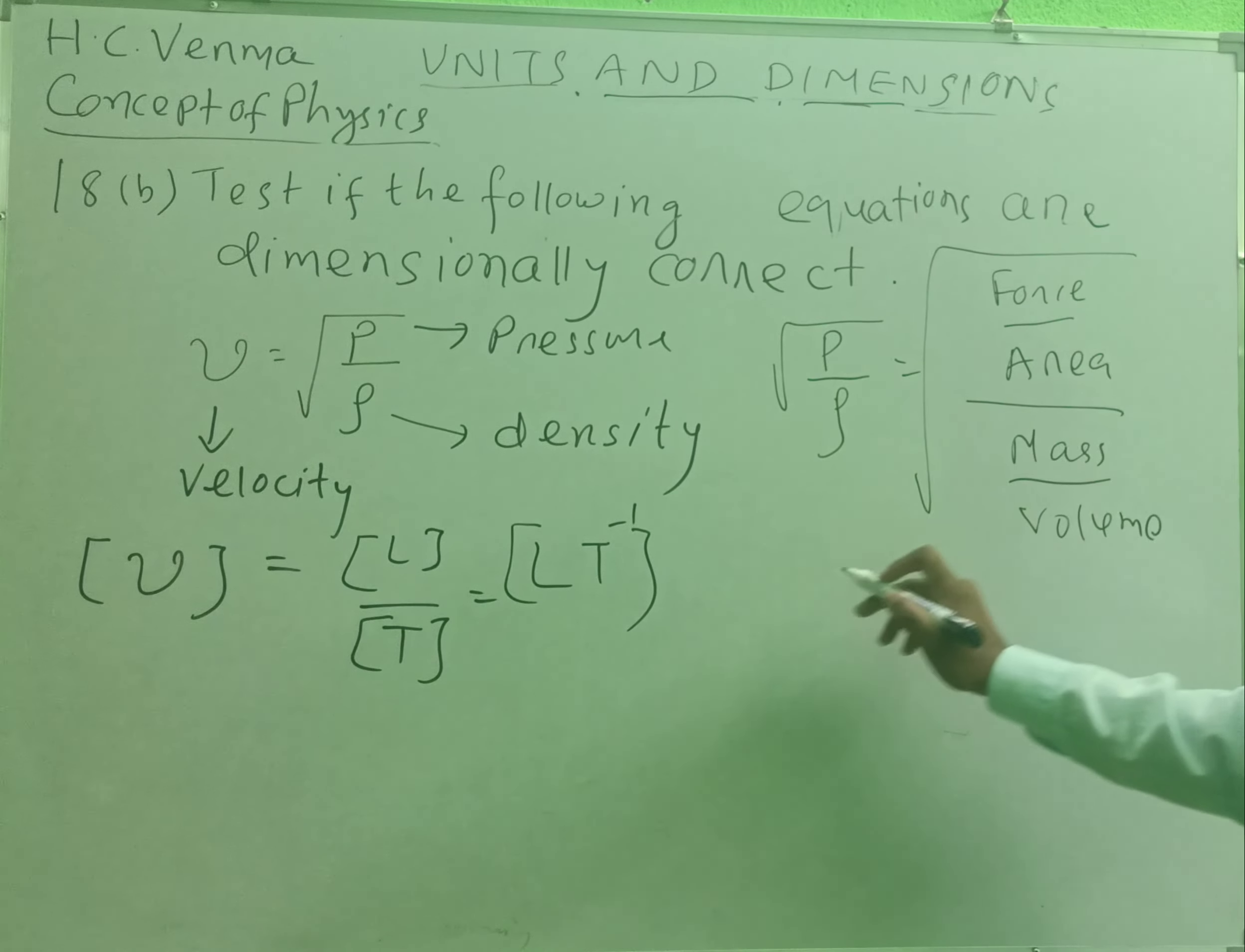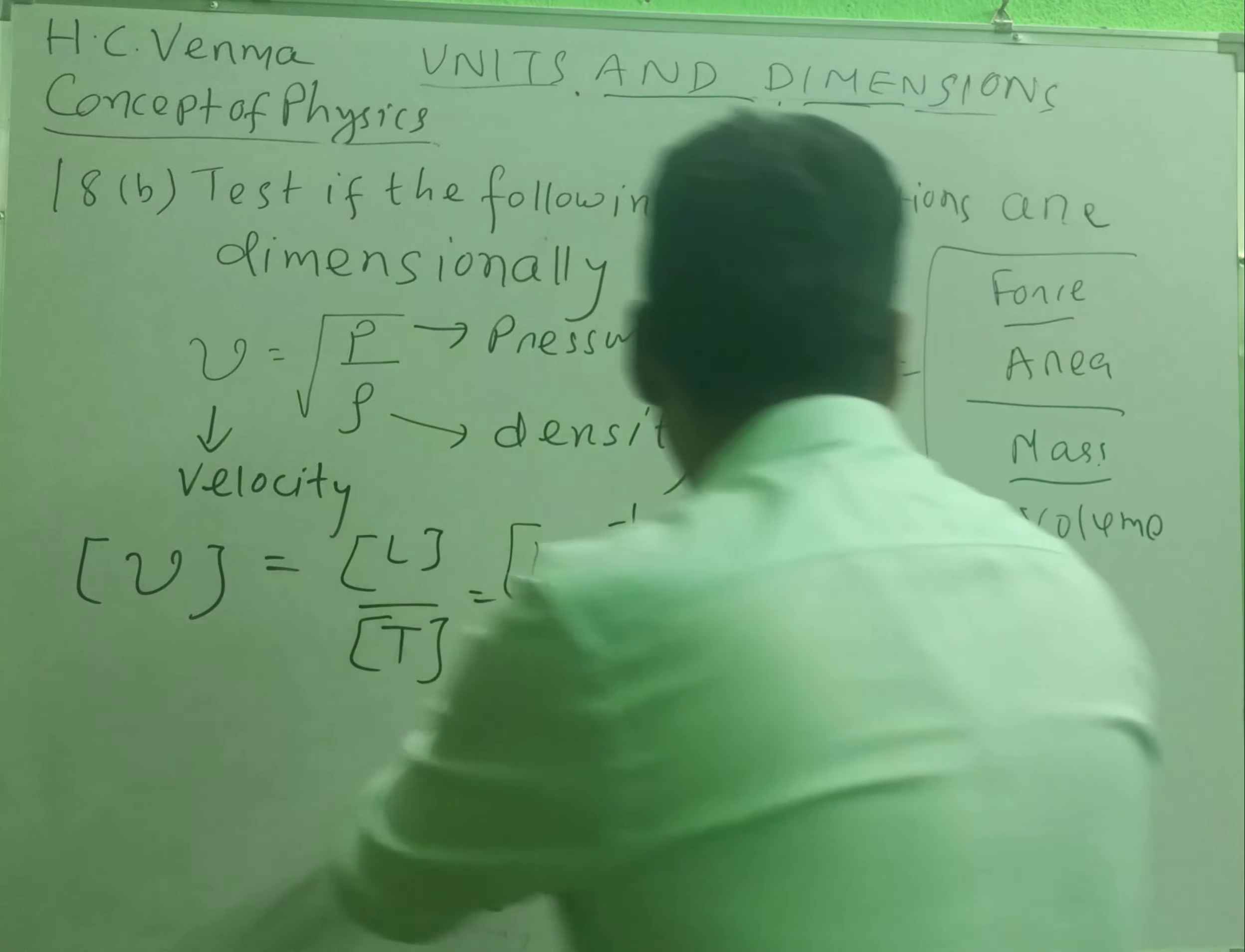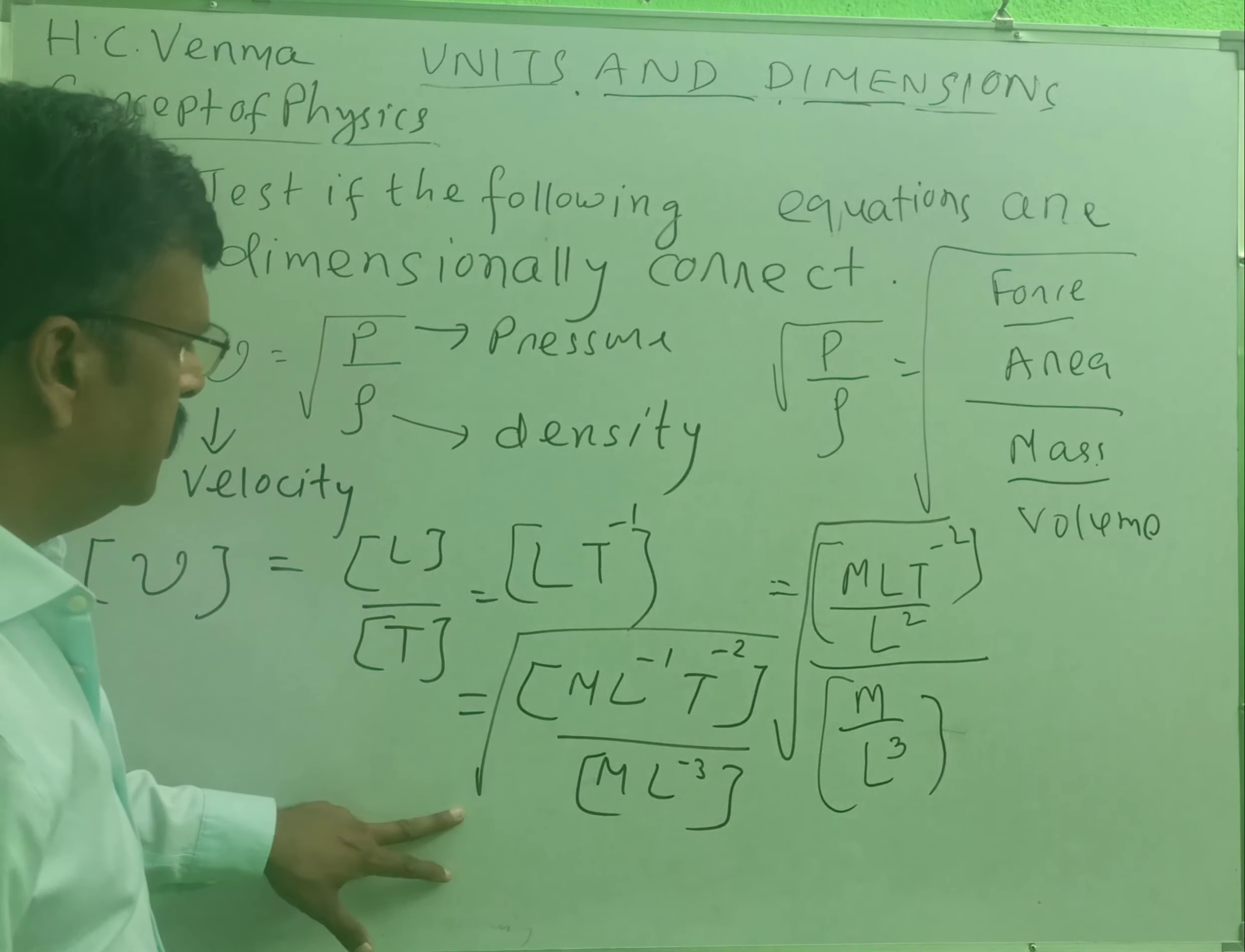What is force? Force is MLT^-2 divided by L^2, and what is divided by mass by L cube? This is ML^-1T^-2 divided by, square root is there, ML to the power minus 3. There is square root here. This M cancels out.